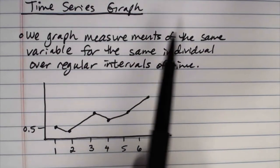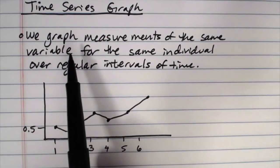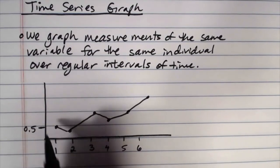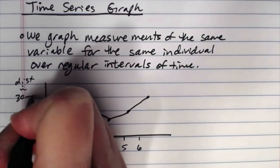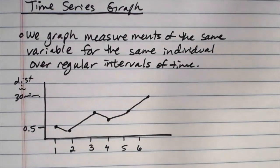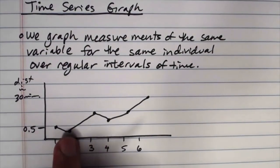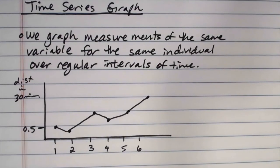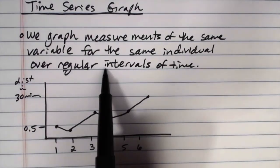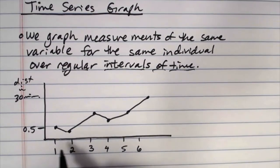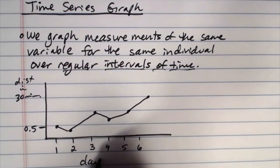But notice that we're measuring the same variable, the distance covered in 30 minutes, same variable for the same individual. We've only included one person on this graph. We haven't included multiple individuals. And then regular intervals of time. I'm taking my measurement, in this case, daily.